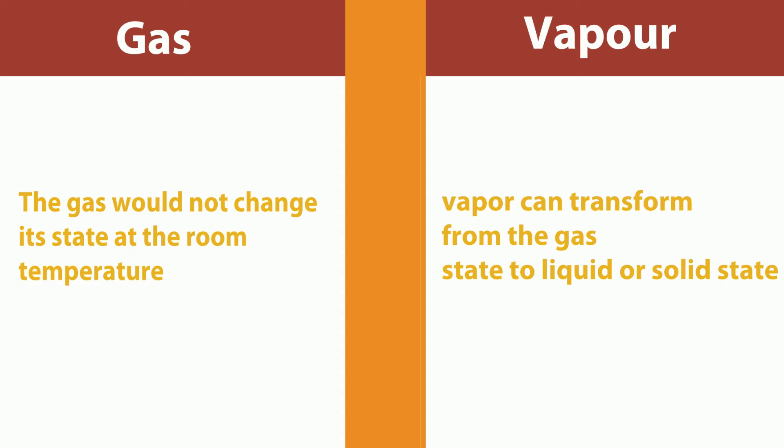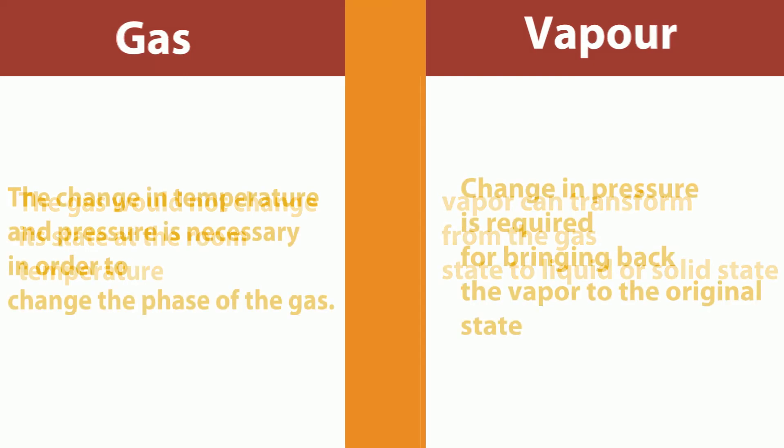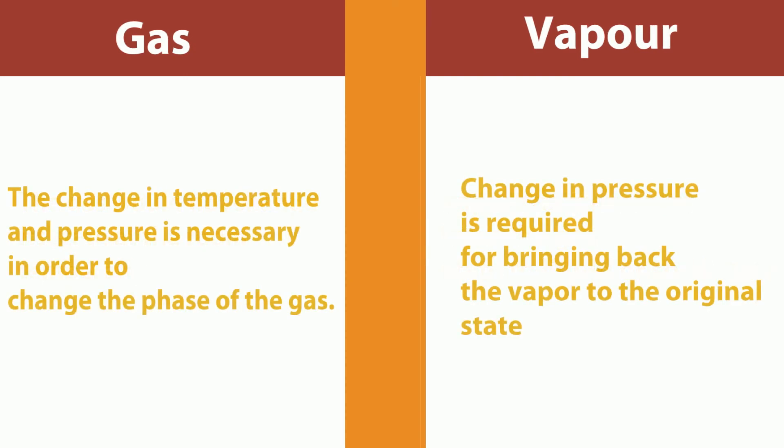A change in both temperature and pressure is necessary to change the phase of a gas. On the other hand, only a change in pressure is required to bring vapor back to its original state.